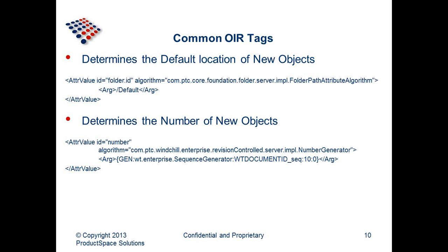That doesn't mean users can't change the default location — it just helps them with a starting point. What we've also seen is people set a default folder created on a different domain with restricted access, which forces users to pick a folder rather than checking in anywhere they want. The last common OIR tag is the number. What we have is a number generator — in the database we have a sequence defined. We can create a WT document number with 10 characters, and you can adjust this to change your number generator or the length of the number characters.